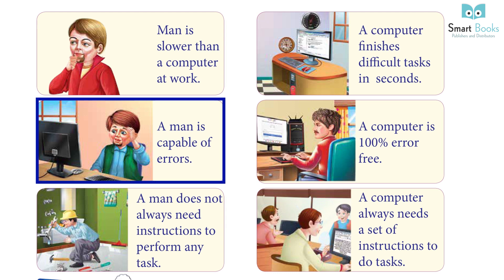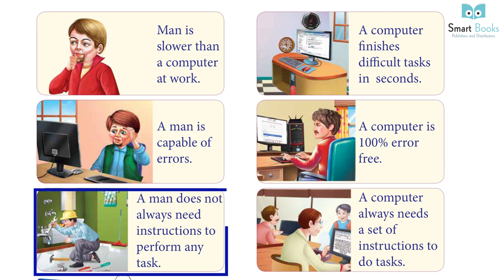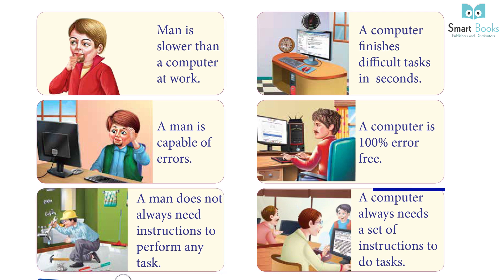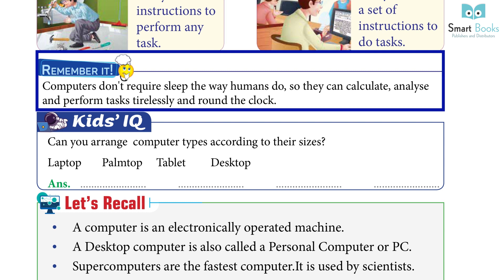A man is capable of errors, whereas a computer is 100% error free. A man does not always need instructions to perform any task, but a computer always needs a set of instructions to do tasks. Remember: computers don't require sleep the way humans do, so they can calculate, analyze, and perform tasks tirelessly and round the clock.